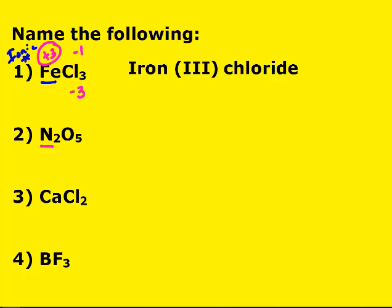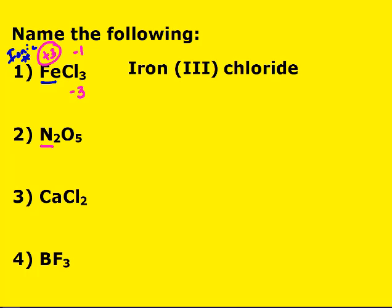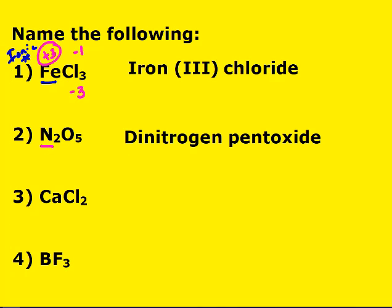The second compound: nitrogen — find it on the periodic table — it's a nonmetal. Since it's a nonmetal, I should use prefixes, so I don't care about charges. I have two nitrogens and five oxygens — dinitrogen pentoxide. The next one: Ca — find it on the periodic table — it's in group 2A, it's a metal, which means I don't use Roman numerals and I don't use prefixes.